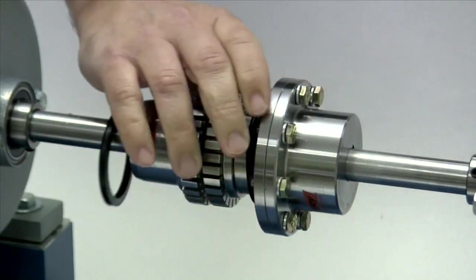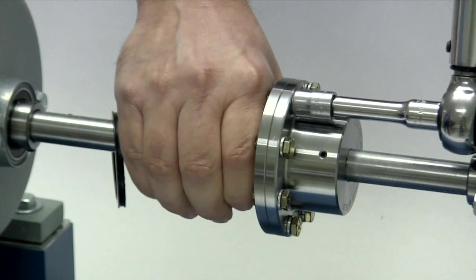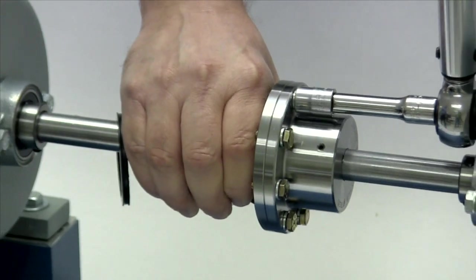You should tighten the bolts in a criss-cross pattern, first to 50% of the recommended torque, then 75%, then to the full torque.